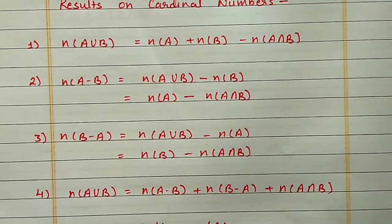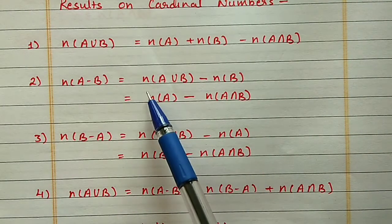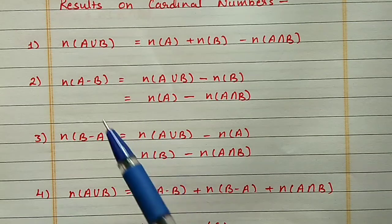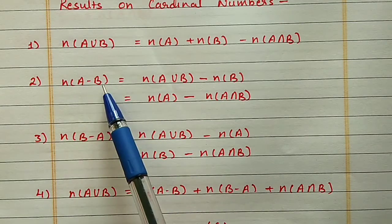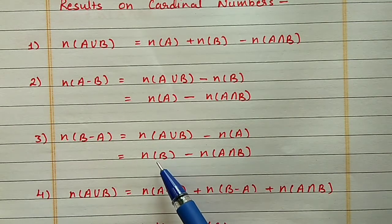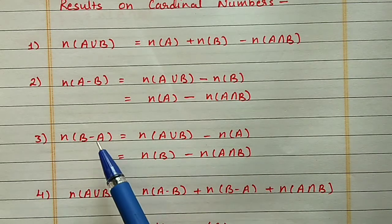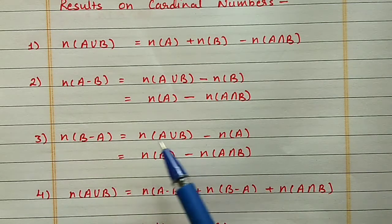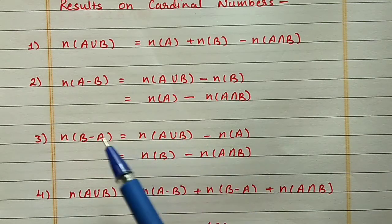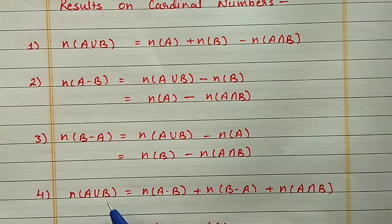The third property is N(B - A) = N(A∪B) - N(A). The second and third properties are similar; the only difference is here it is A minus B and here it is B minus A. We can also write it as N(B) - N(A∩B), so from B if we remove the common elements we will get N(B - A).